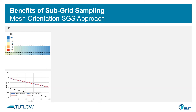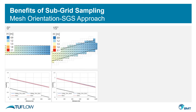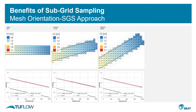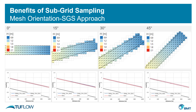However, if we use subgrid sampling our cells can be partially wet and we better represent the wet-dry boundary. This means we don't have the same sawtooth effect, we don't introduce artificial head losses, we don't distort the streamlines, and our results don't appear to be sensitive to the mesh orientation.